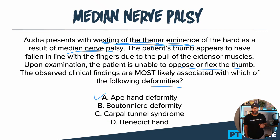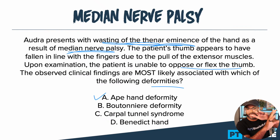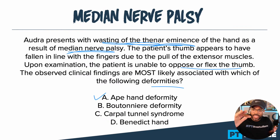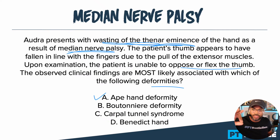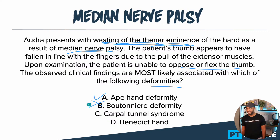Answer B is boutonniere deformity. Boutonniere deformity is when you have a central slip disruption on the back of the fingers. It's typically caused by a traumatic event — like a laceration — and the finger moves into flexion at the PIP and hyperextension at the DIP. Here's the thing: boutonniere deformity happens more towards the fingers, not the thumb. The question didn't mention a traumatic event, and it just doesn't make sense here. I'm eliminating this — it doesn't fit.